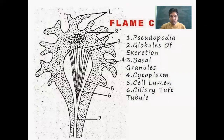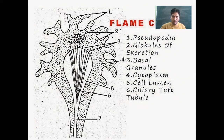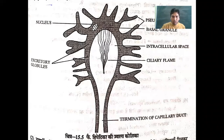Here you can see the flame cells with pseudopodia, globules of excretion, basal granules, and cytoplasm. The cilia are moving like a flame, and in the center is the cavity. This cavity terminates into a capillary duct.